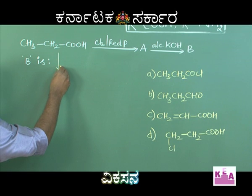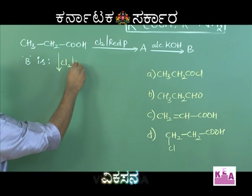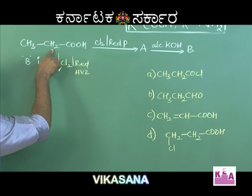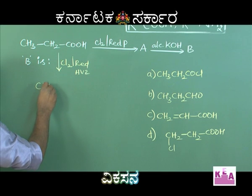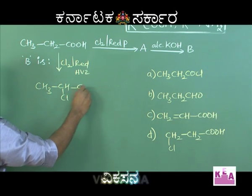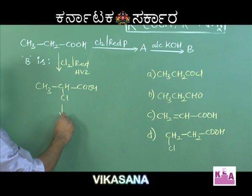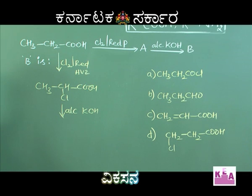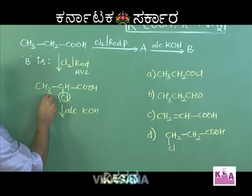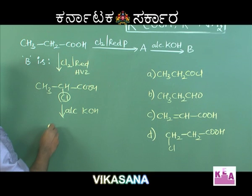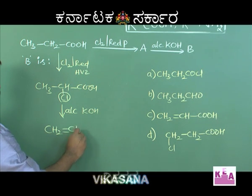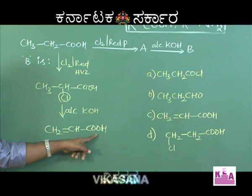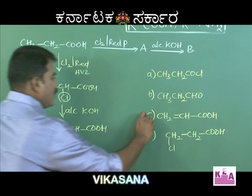For propanoic acid, with chlorine and red phosphorus, you have the HVZ reaction taking place, and substitution of halogen takes place at the alpha position, giving CH₂=CH-COOH — that is, an alpha-beta unsaturated carboxylic acid.